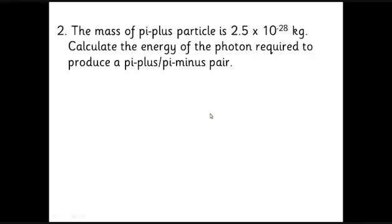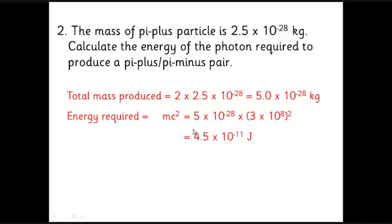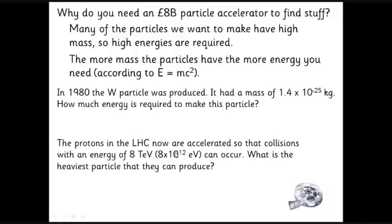For pair production — making a π⁺ and π⁻ — the mass of a pi-plus is 2.5 × 10⁻²⁸ kg. The pi-minus must have the same mass since they are a particle-antiparticle pair. So the total mass created is twice that. Using E = mc², the energy needed is 4.5 × 10⁻¹¹ joules. These are relatively light particles — heavier particles require more and more energy.